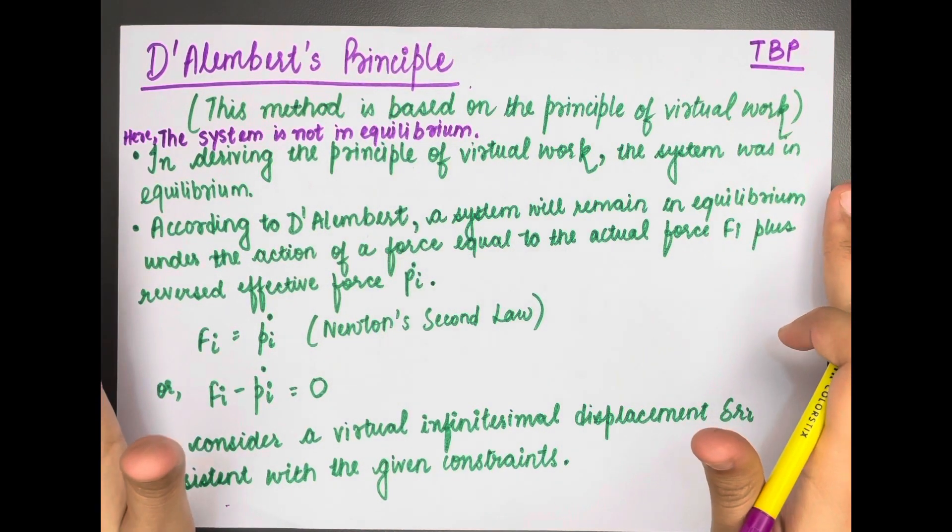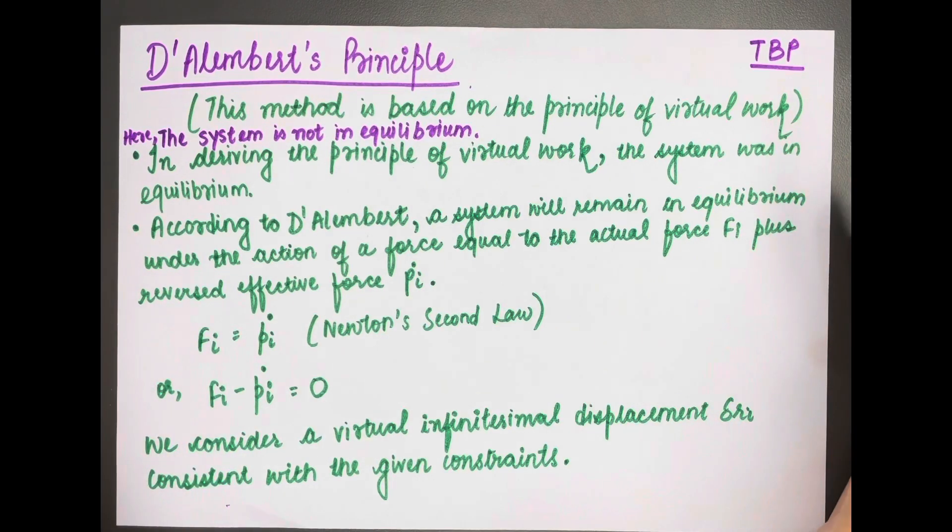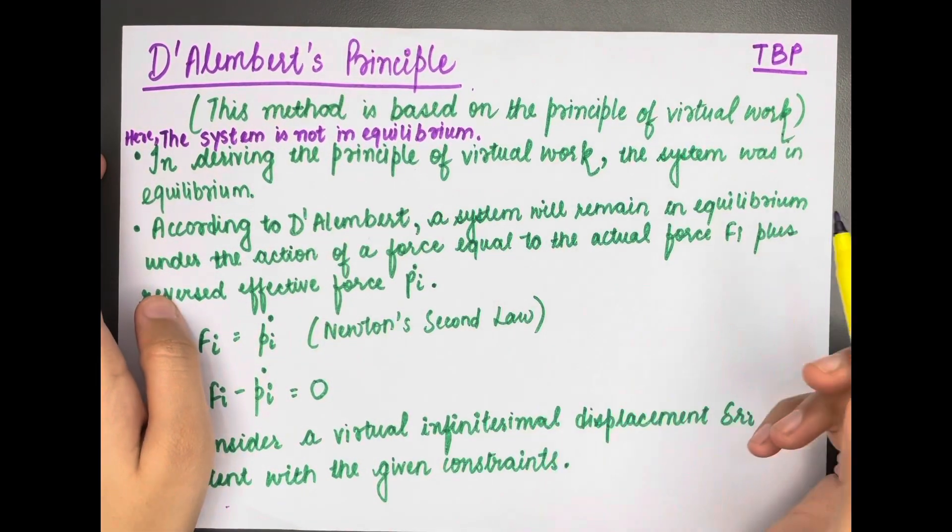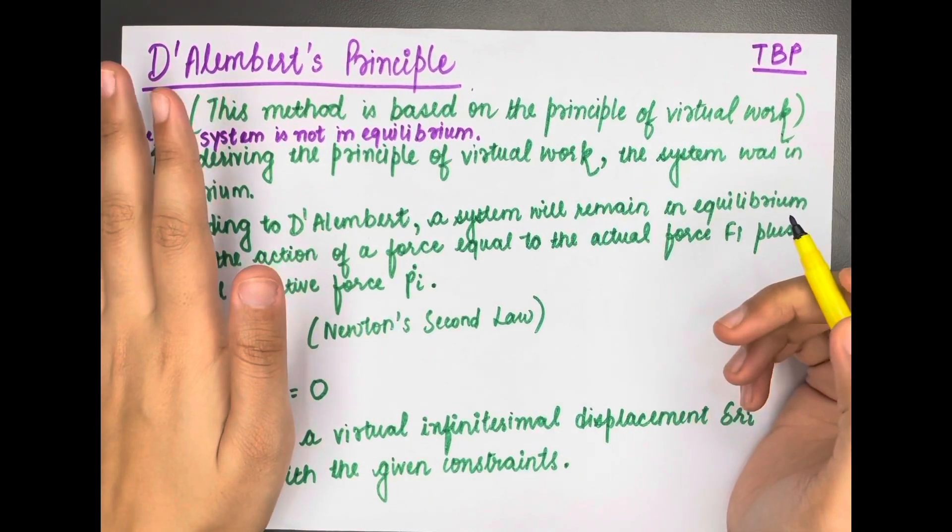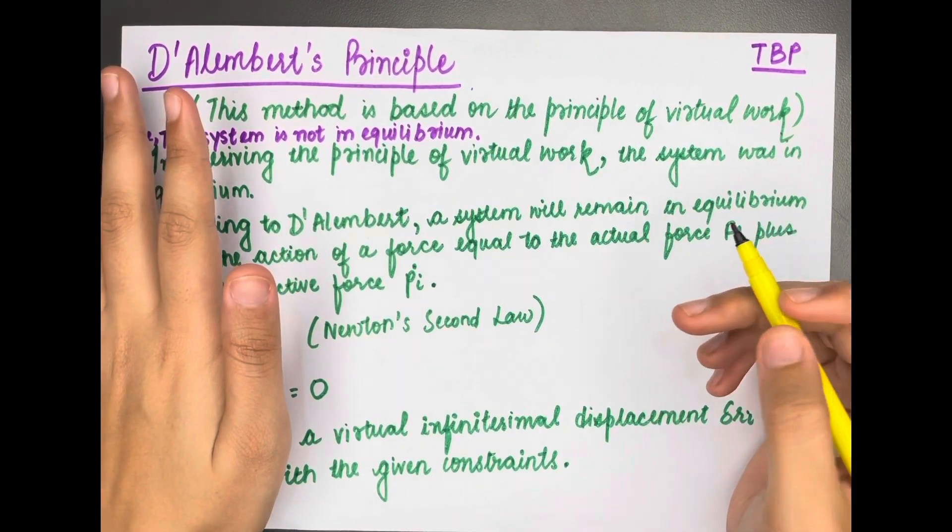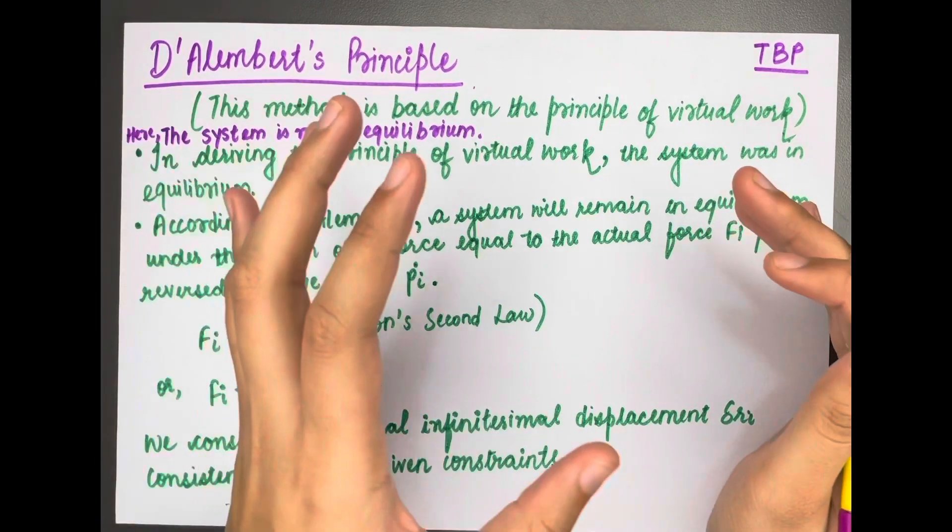In the principle of virtual work, we said that the system we are considering is in equilibrium. In this derivation, we are not considering the system to be in equilibrium. So we want to apply the principle of virtual work to a system which is not in equilibrium.